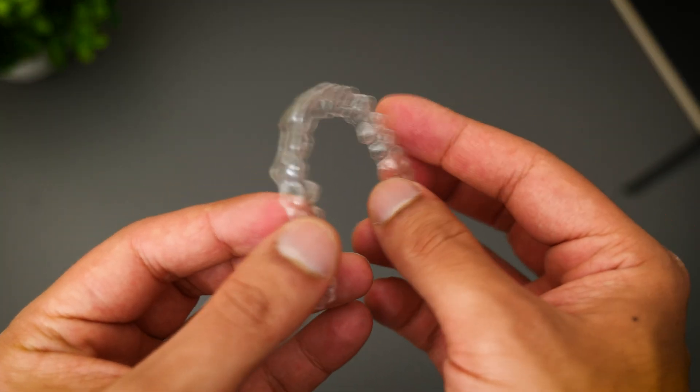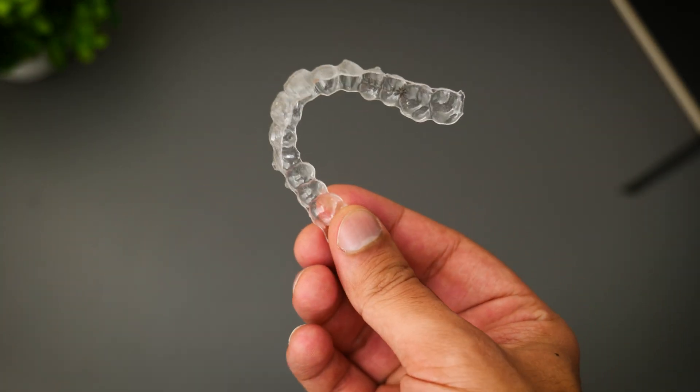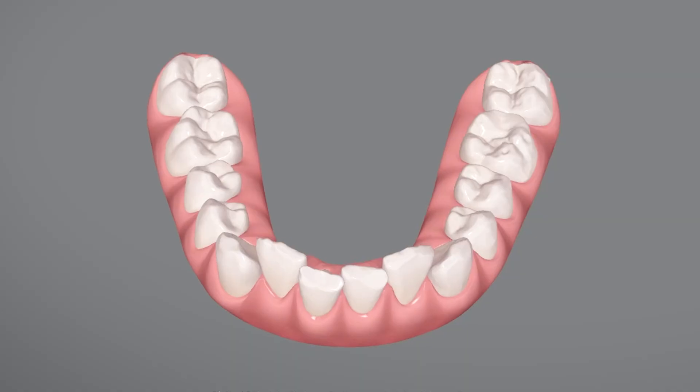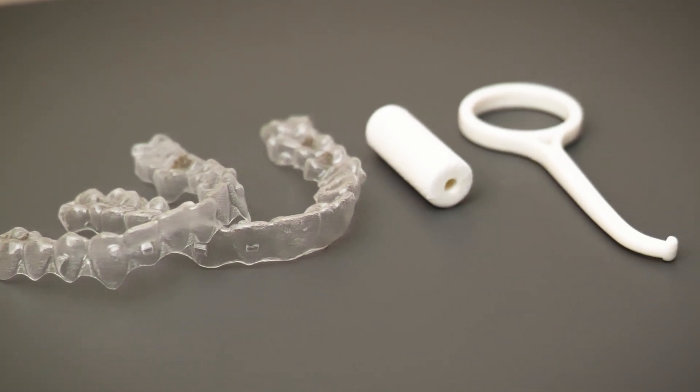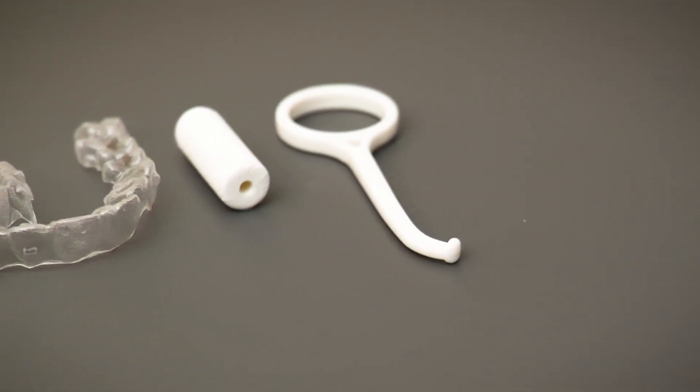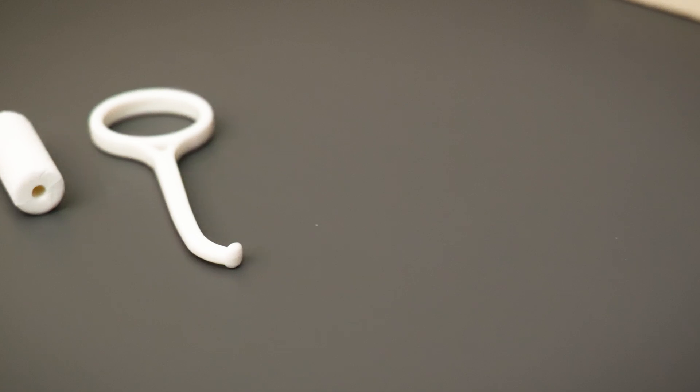This is a clear aligner and it's part of a system called Invisalign, which is a clear brace system that I use to help my patients get straighter and nicer smiles. In addition to the aligners, I also give my patients a couple of other implements that help the treatment go as smooth as possible.